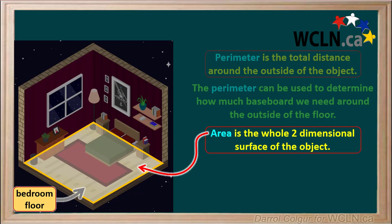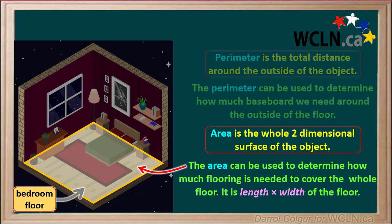Also recall that the area is the total two-dimensional surface of the floor. Area will tell us how much flooring is needed to cover the floor of this room. Area is calculated by multiplying the room's length by its width.